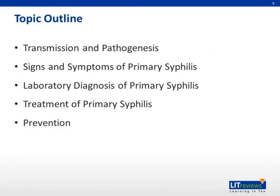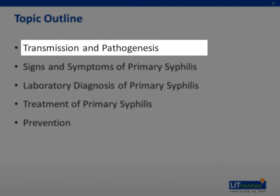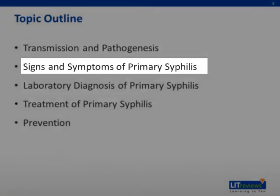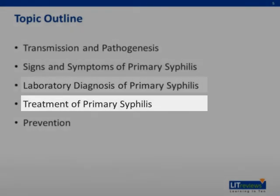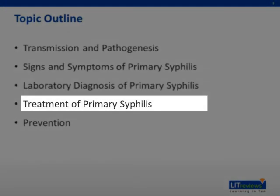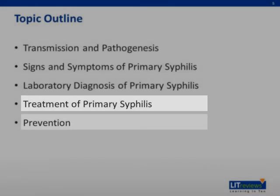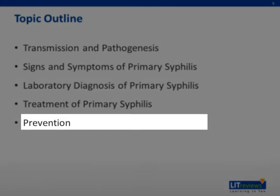The topic outline is as follows: Transmission and Pathogenesis, Signs and Symptoms of Primary Syphilis, Laboratory Diagnosis of Primary Syphilis, Treatment of Primary Syphilis, and finally, Prevention.